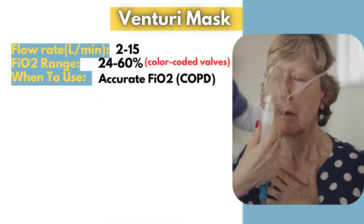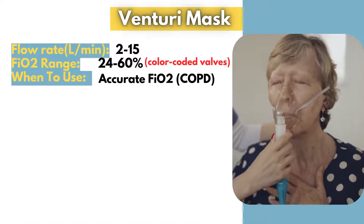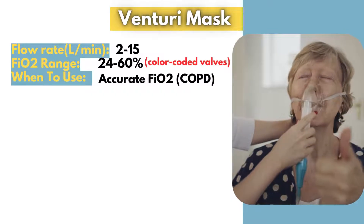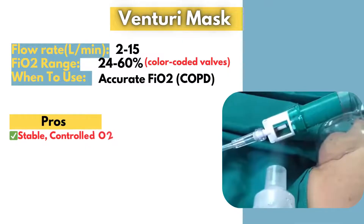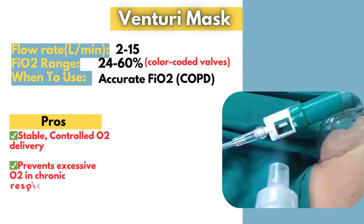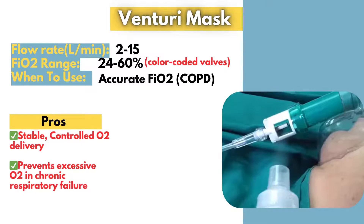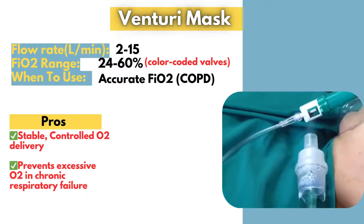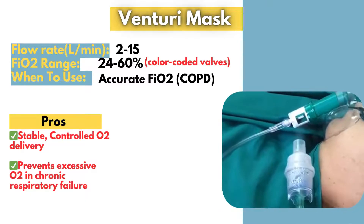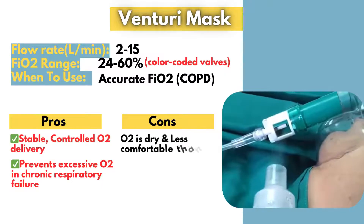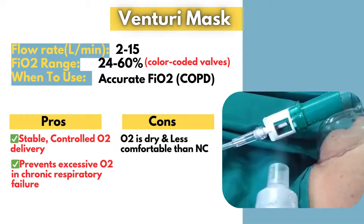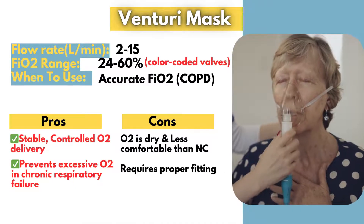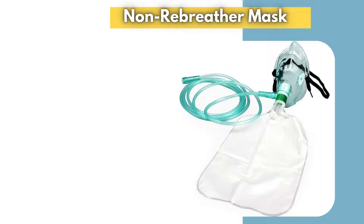The Venturi mask is particularly beneficial for patients with chronic obstructive pulmonary disease, as they require precise oxygen delivery to prevent carbon dioxide retention. Since the Venturi mask's entrainment ports and adapters tightly regulate the oxygen-air mixture, patients receive a constant fraction of inspired oxygen that does not fluctuate with their breathing pattern. Like other oxygen devices, the oxygen from a Venturi mask is typically dry unless a specialized humidifier is attached. Additionally, for the mask to work correctly, it must be properly fitted to the patient's face to prevent leaks and ensure accurate oxygen delivery.